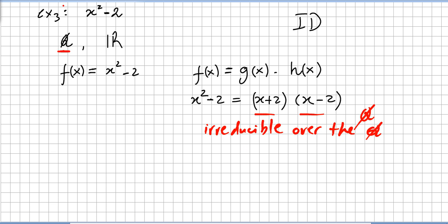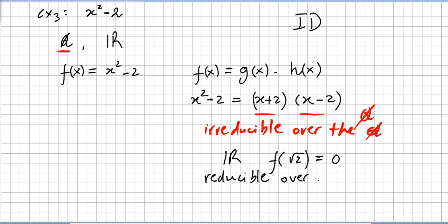What about the real numbers? For the real numbers, it suffices to take f(√2). f(√2) = 0, so it is obvious that the polynomial is reducible over the real numbers.